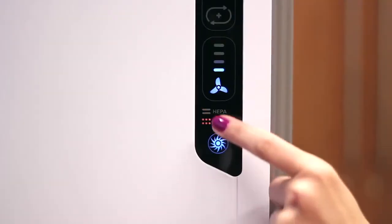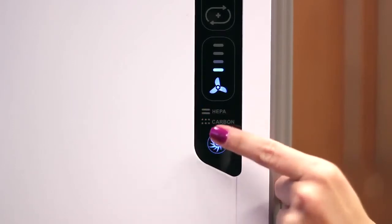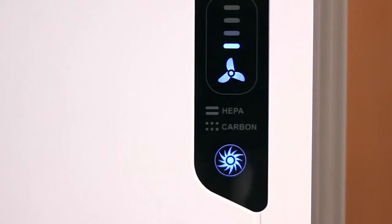Next, tap the filter icons to alternate between the HEPA and carbon indicator lights. Once the desired filter is illuminated, press and hold for 3-5 seconds until you hear a short beep. The indicator lights should turn off. Repeat this process for each filter as needed.